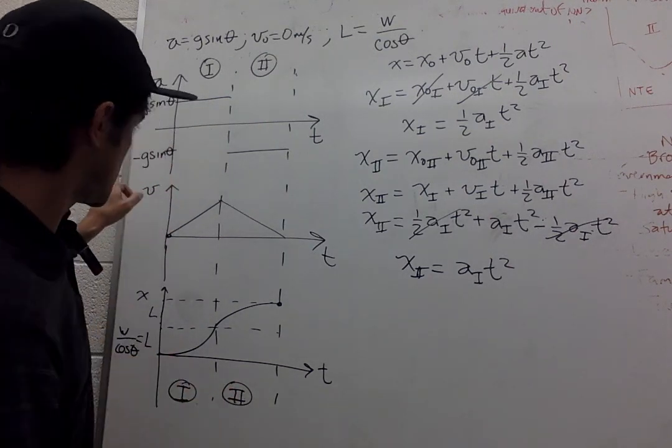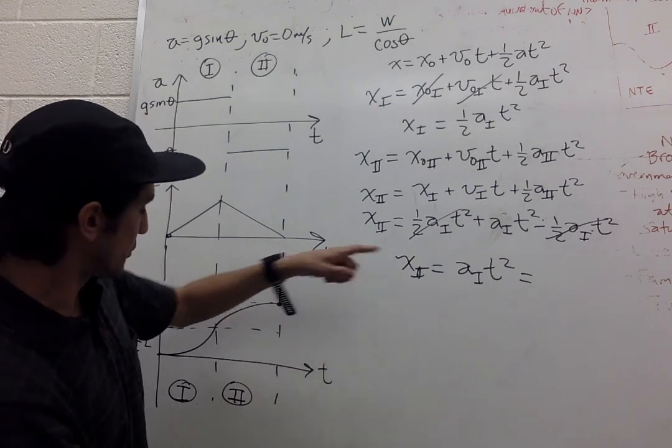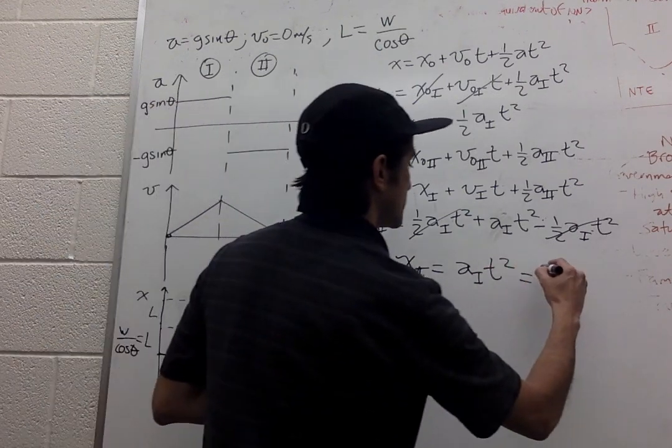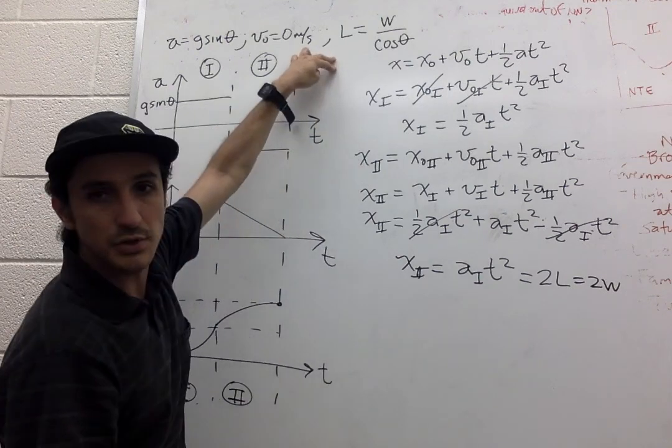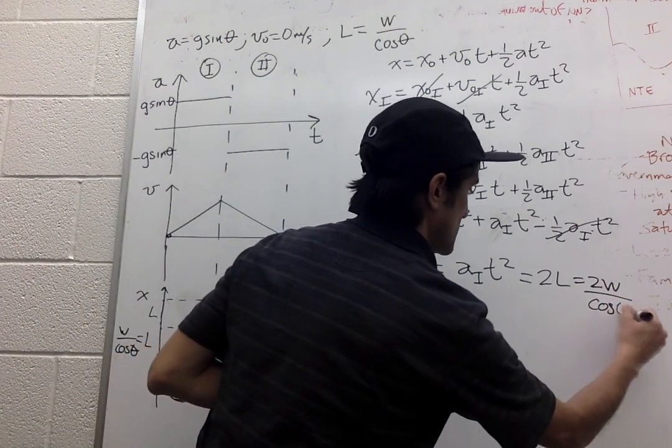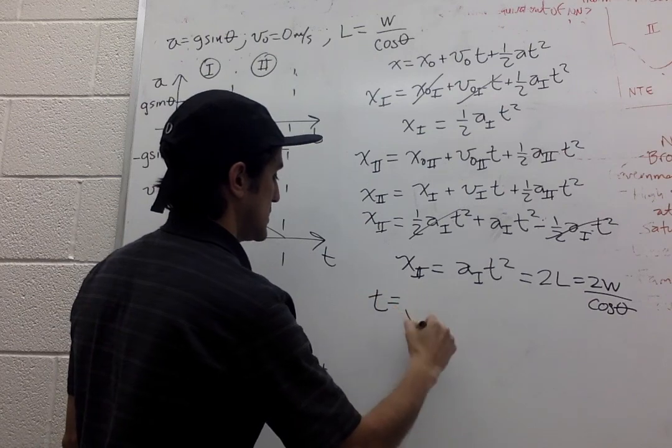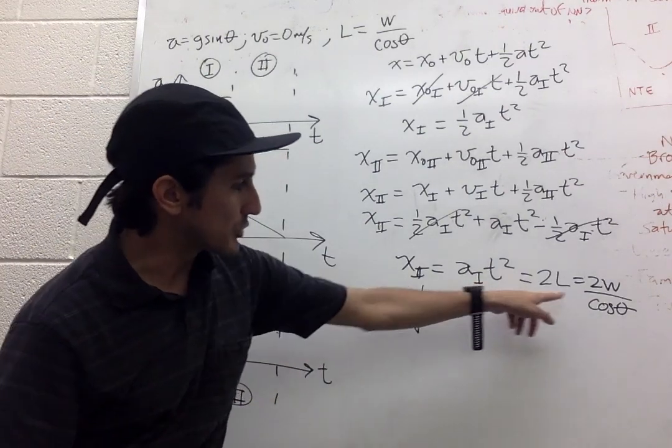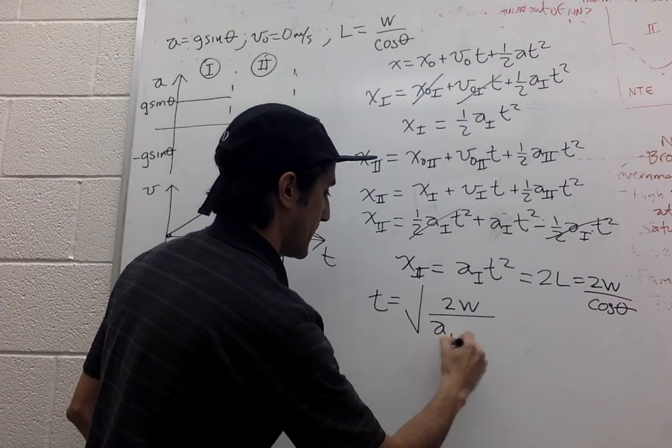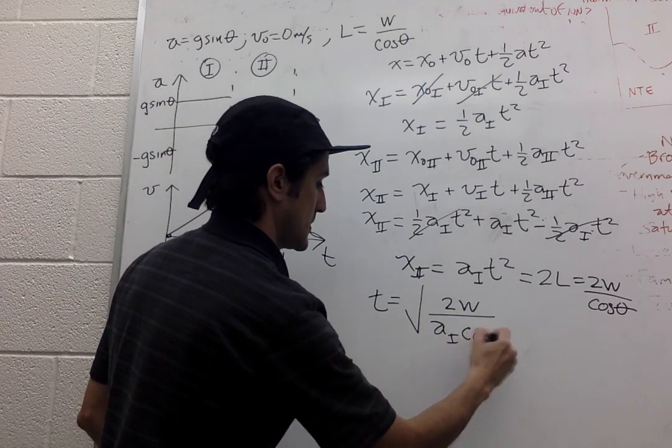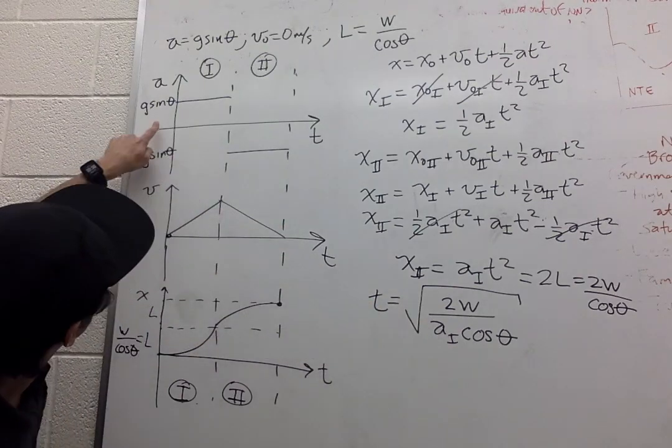So we know that this is going to be equal to 2L, so 2W over cosine theta. And we're very close to getting what we want. So t is going to be the square root of 2W over A1 cos theta. And A1 is g sin theta.